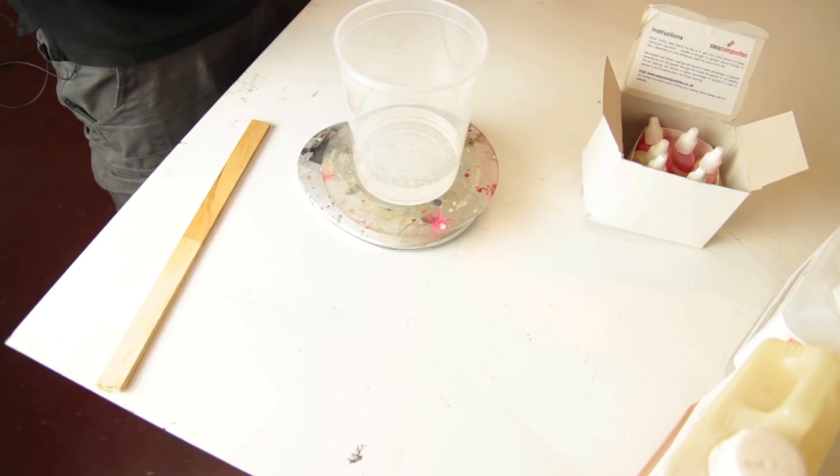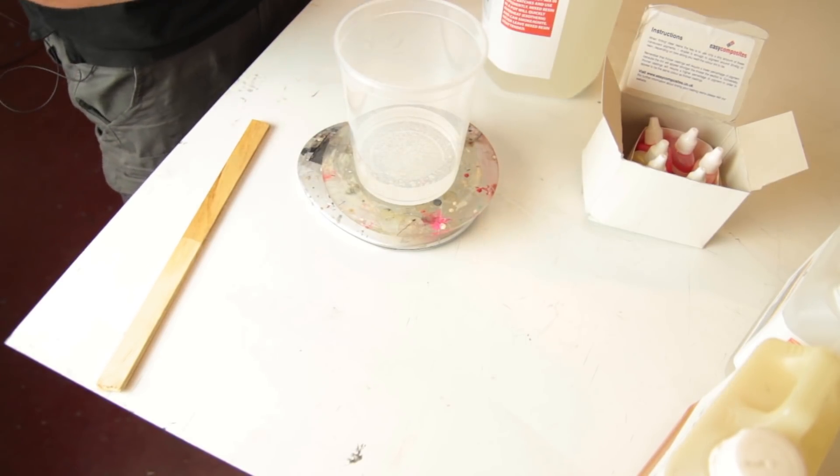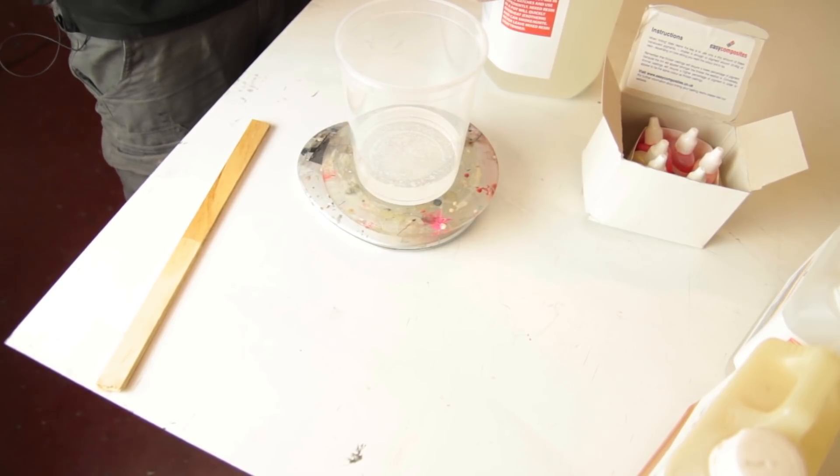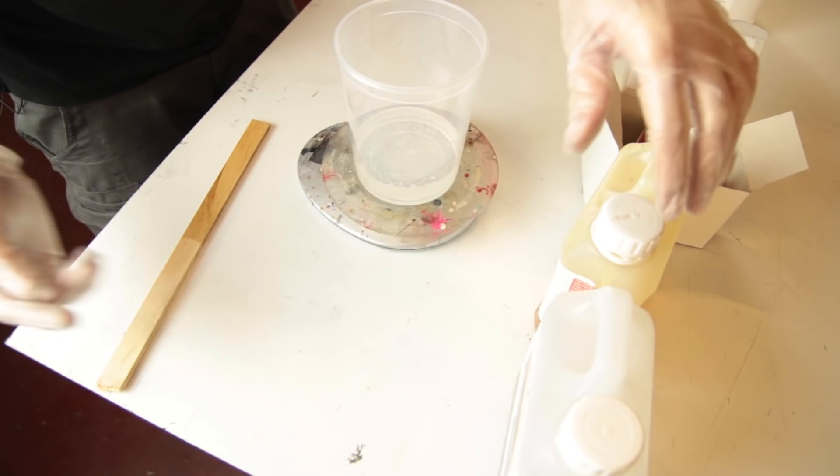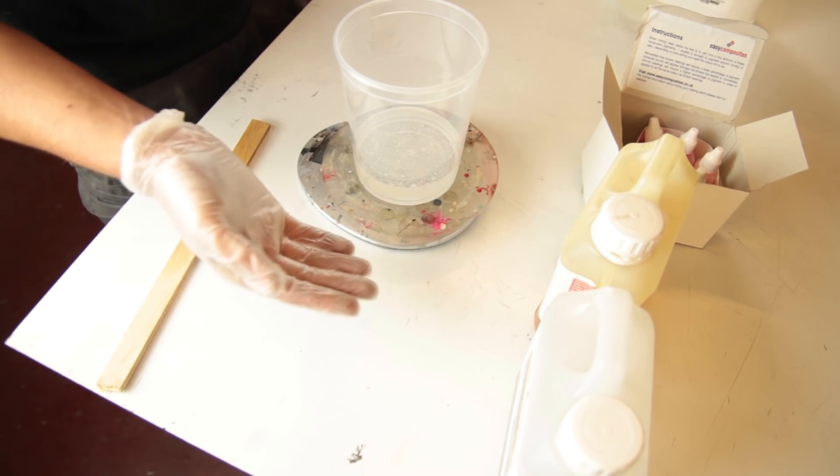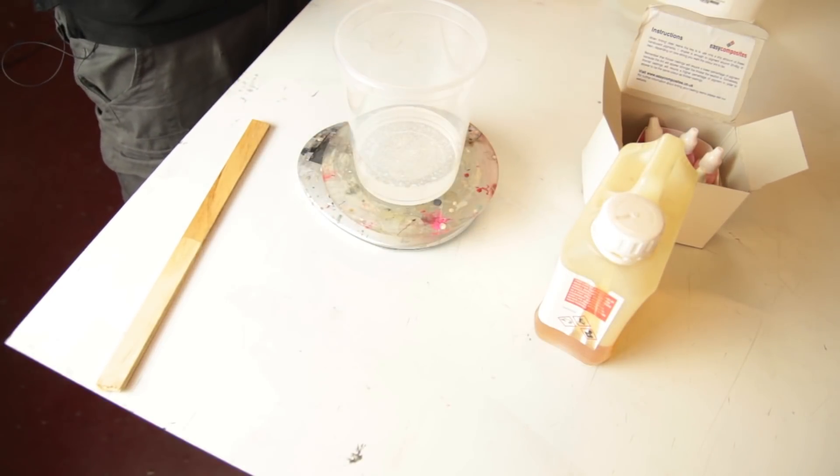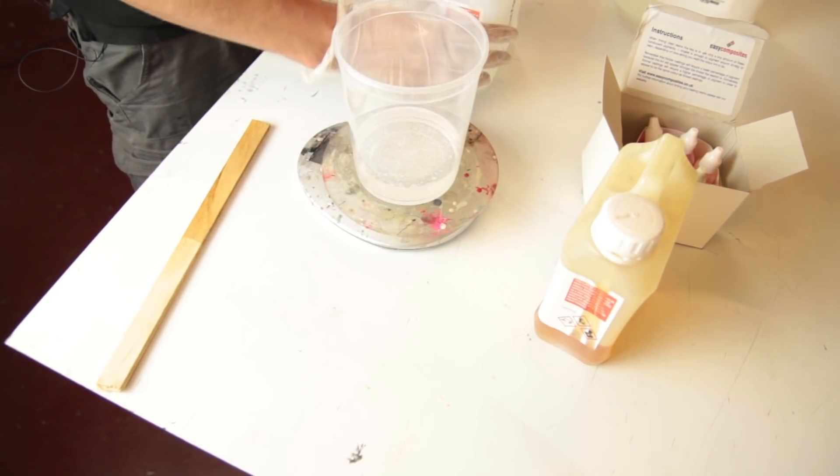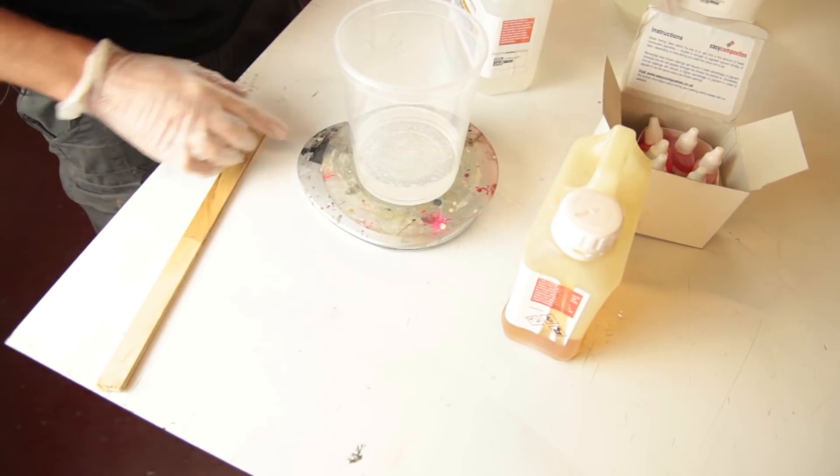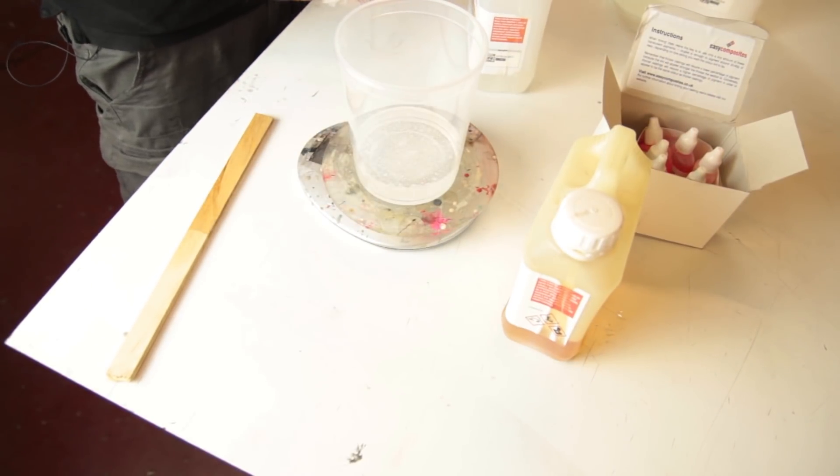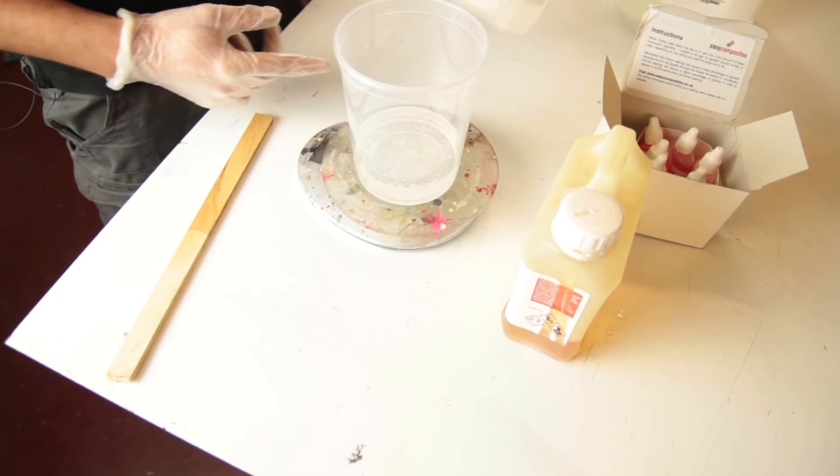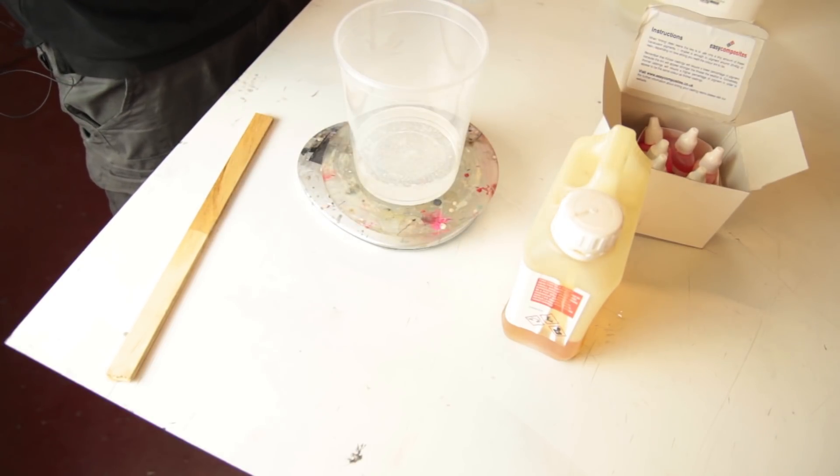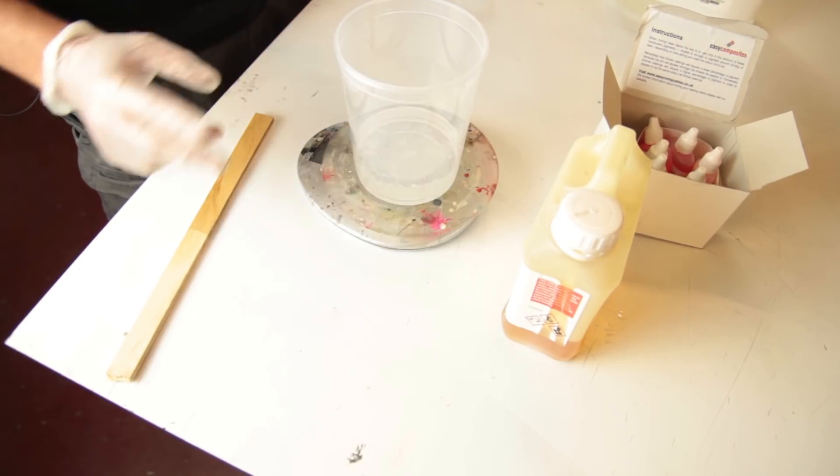Here's a cool thing: you can use the slow hardener and fast hardener together to have it cure faster but not too fast. I'll be using a two-to-three mixture—two parts of the slow and one part of the fast. For 200 grams, the ratio is 100 to 30, so I'll do 40 grams of the slow and 20 grams of the fast.